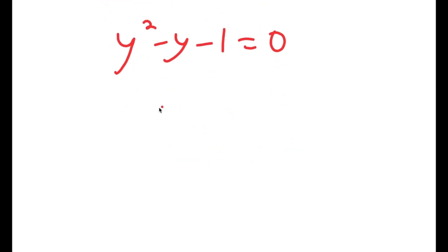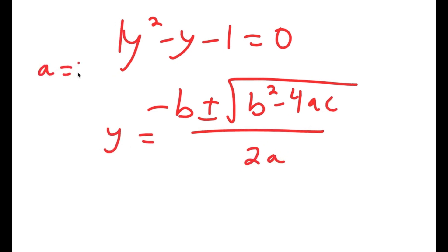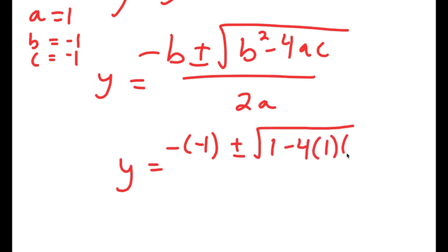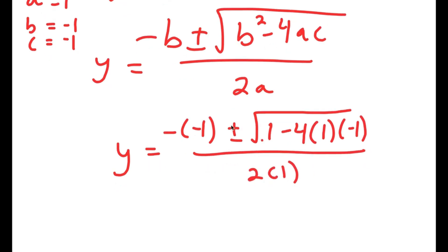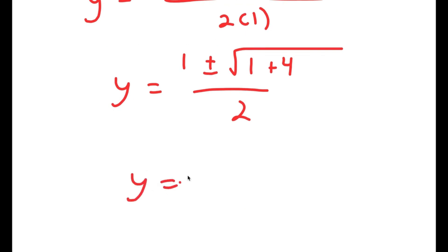To solve this, I use the quadratic formula: negative b plus or minus the square root of b squared minus 4ac, all over 2a. Here a is 1, b is negative 1, and c is negative 1. So y equals negative of negative 1, plus or minus the square root of 1 minus 4 times 1 times negative 1, all over 2. This simplifies to 1 plus or minus the square root of 5, all over 2.